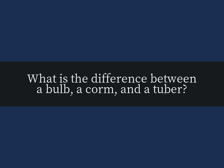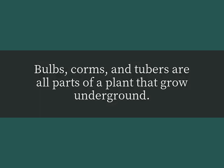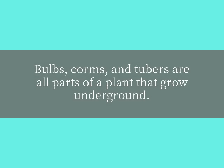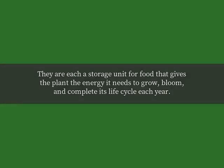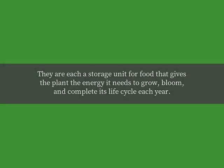What is the difference between a bulb, a corm, and a tuber? Bulbs, corms, and tubers are all parts of a plant that grow underground. They are each a storage unit for food that gives the plant the energy it needs to grow, bloom, and complete its life cycle each year.